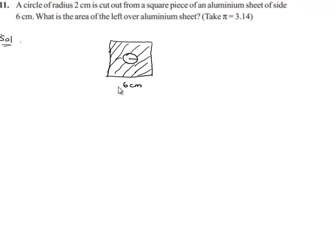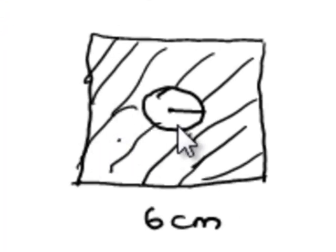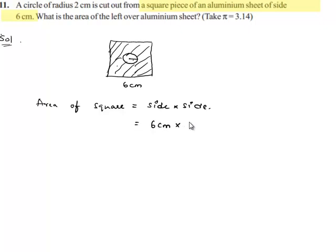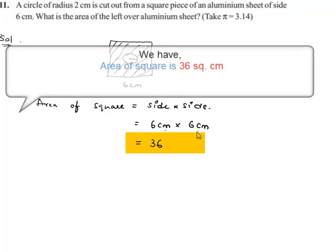To find the remaining area, first we have to find the area of the whole square and then subtract the area of the circle. The area of the square is equal to side × side. The side is given as 6 cm, so 6 cm × 6 cm equals 36 cm².